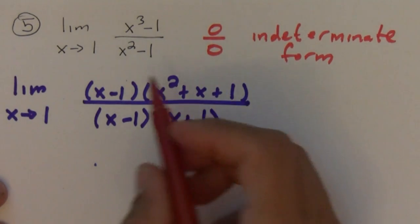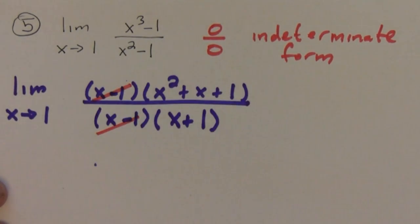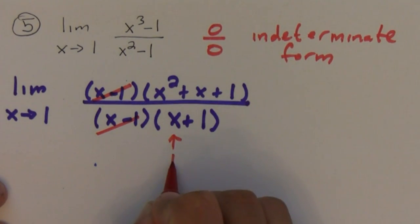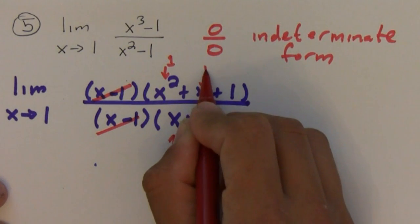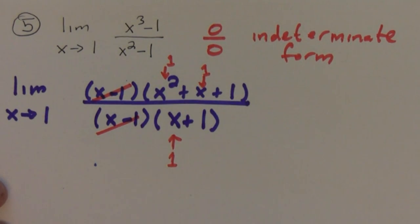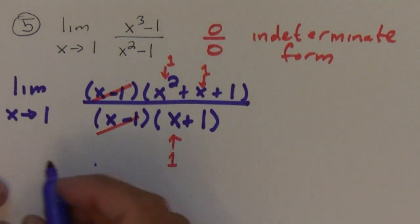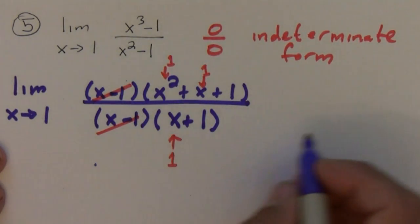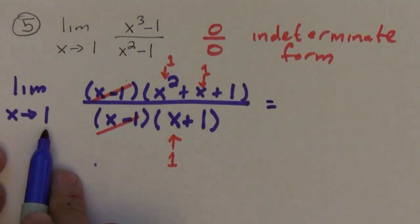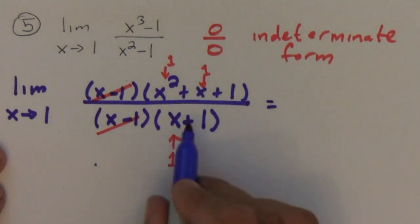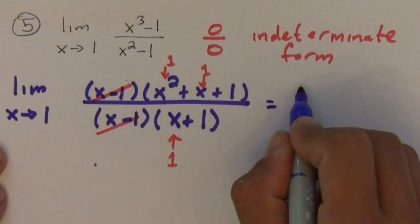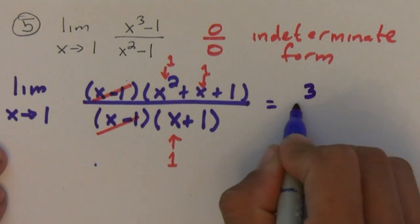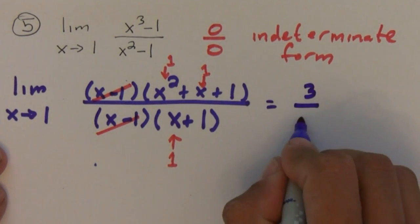The x minus 1's cancel. Now the function is continuous, so if I plug in 1 I get that the limit as x approaches 1 equals 3 over 2.